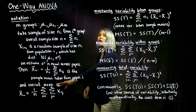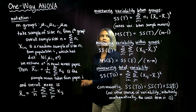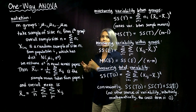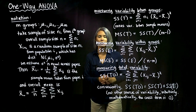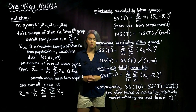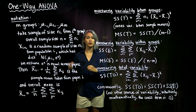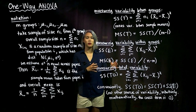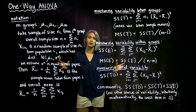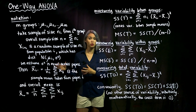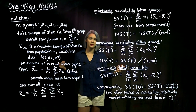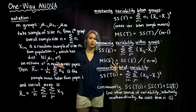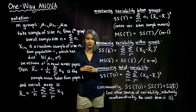Now we can start talking about variability. In one-way ANOVA, we're interested in measuring the variability within groups and the variability between groups, because we want to compare those. If the variability between groups is really large compared to the variability within groups, that probably means we can reject our null hypothesis in favor of our alternative.